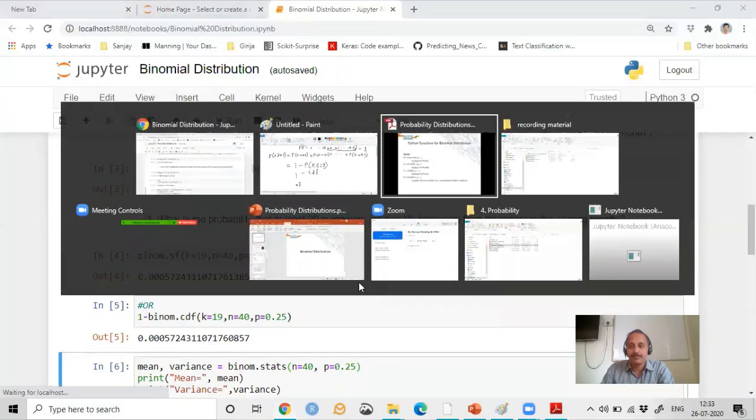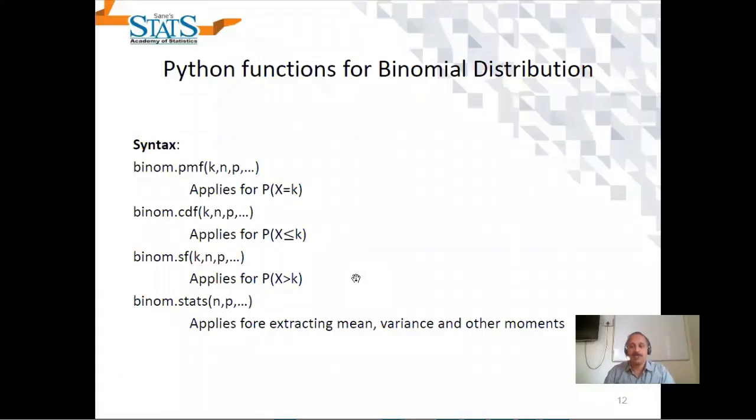So that's it from me for this task of finding binomial probabilities using the Python functions binom.pmf, cdf, sf, and dot stats. For more videos from me, don't forget to subscribe to my channel and click the bell icon for updates. Thank you.